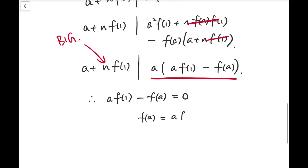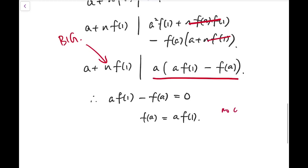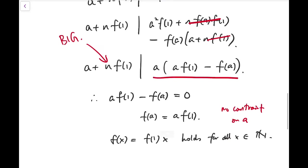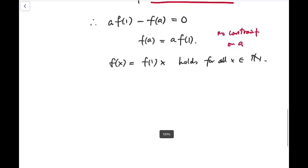We know that a is not 0. So f of a equals a times f of 1. And because this a is fixed and no other, any other constraint, no constraint on a. So basically that means f of x equals f of 1 times x holds for all x.